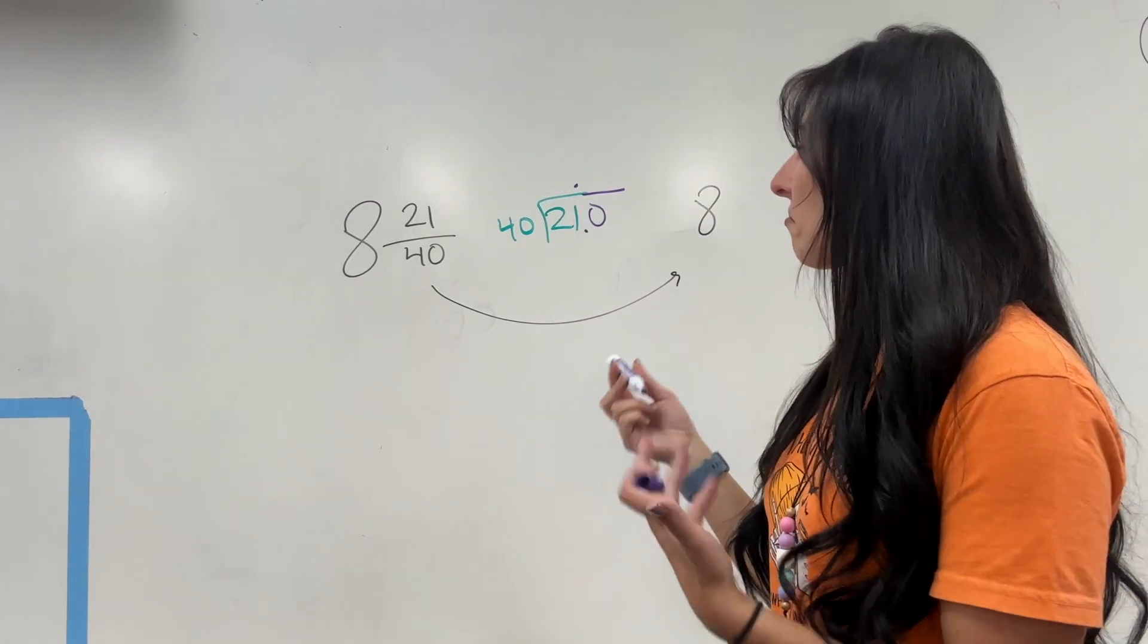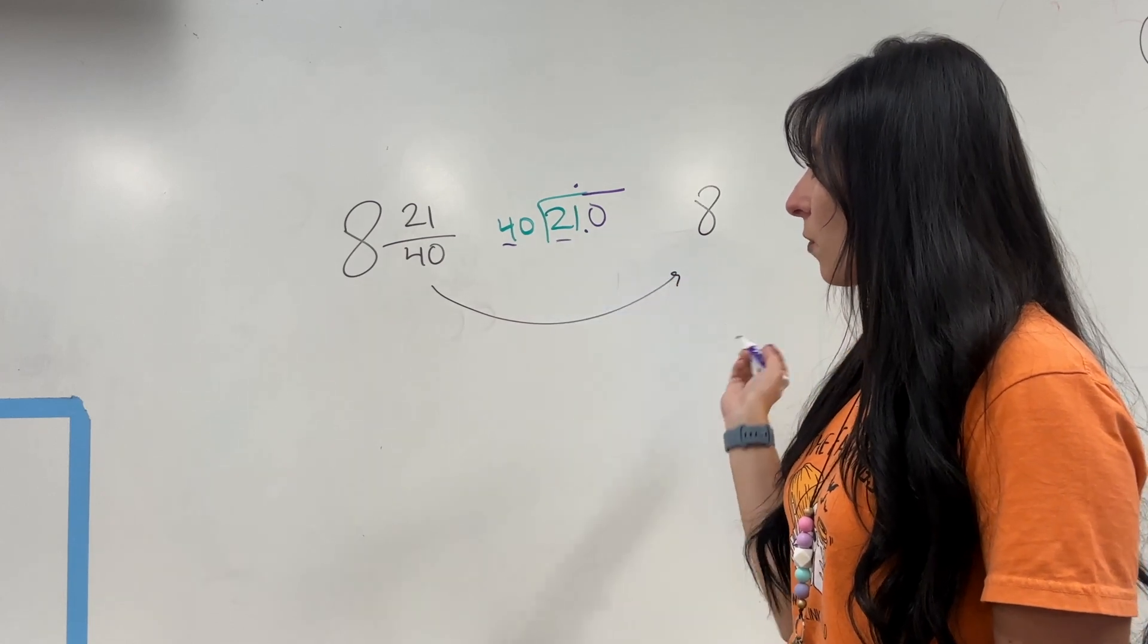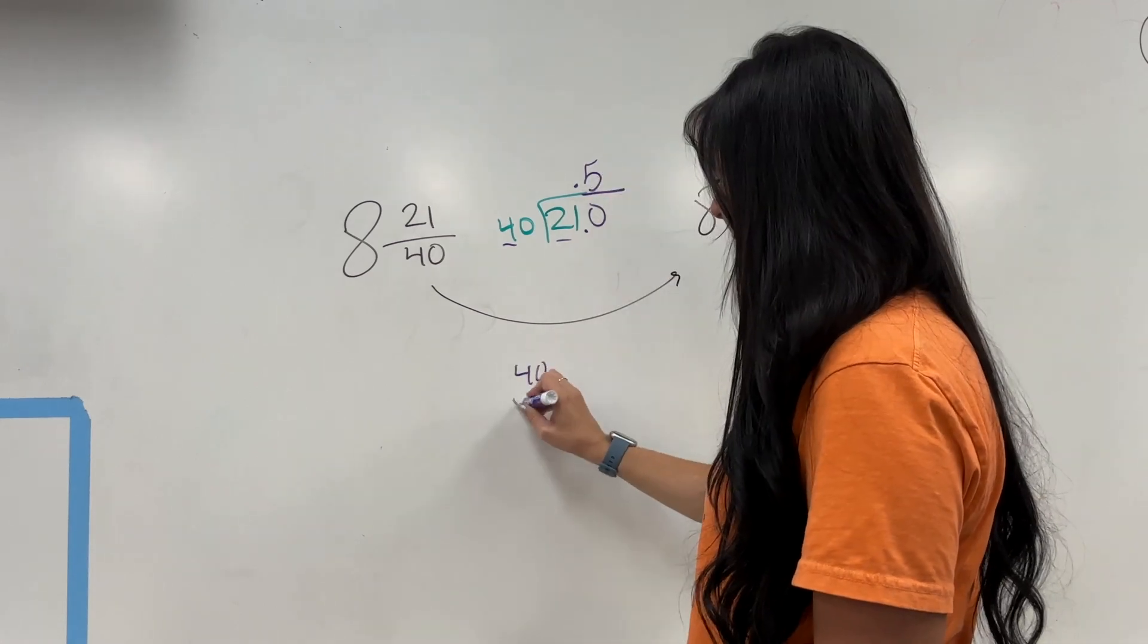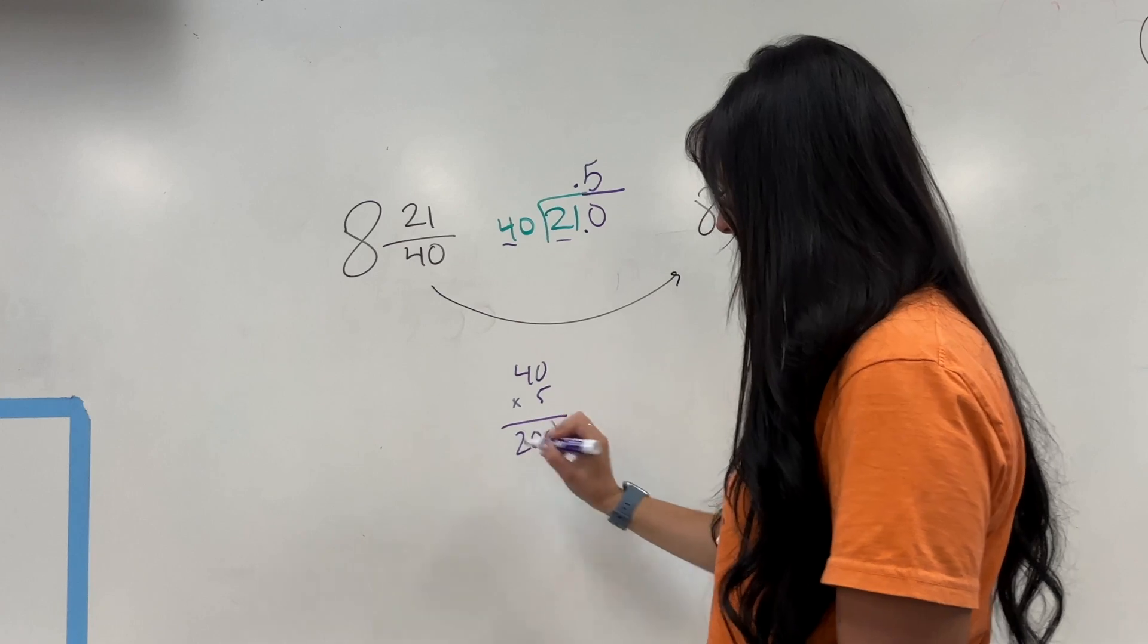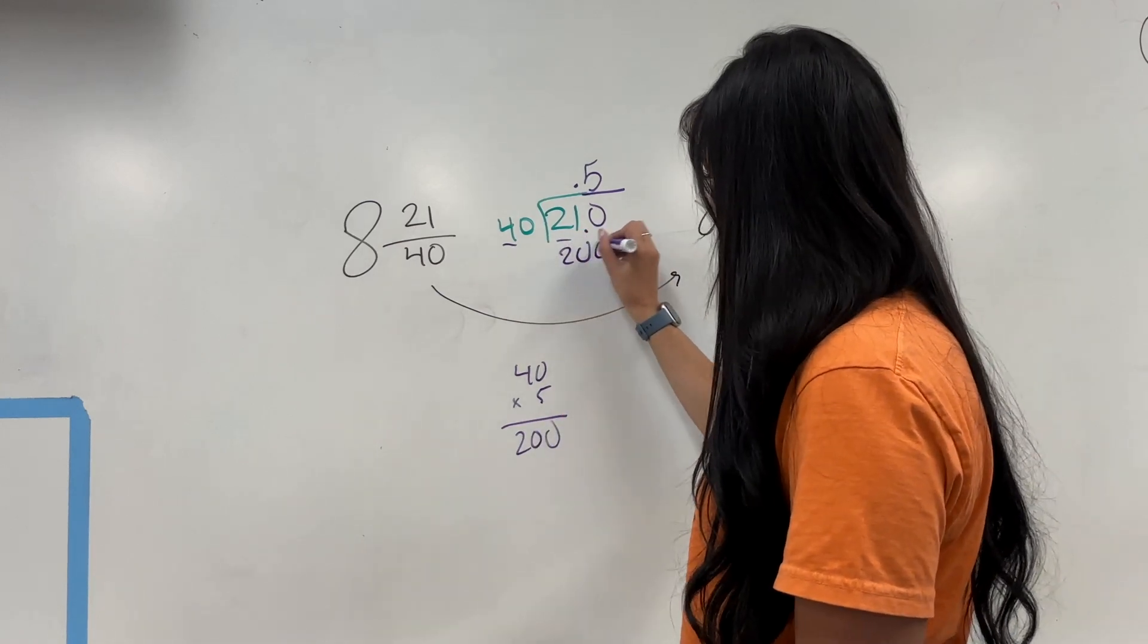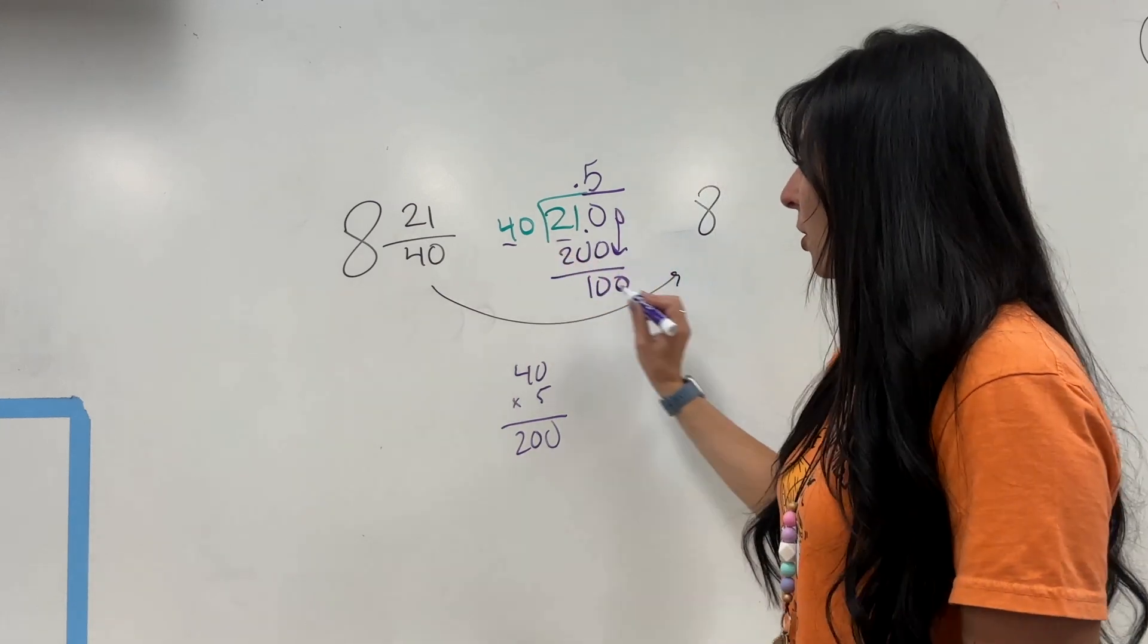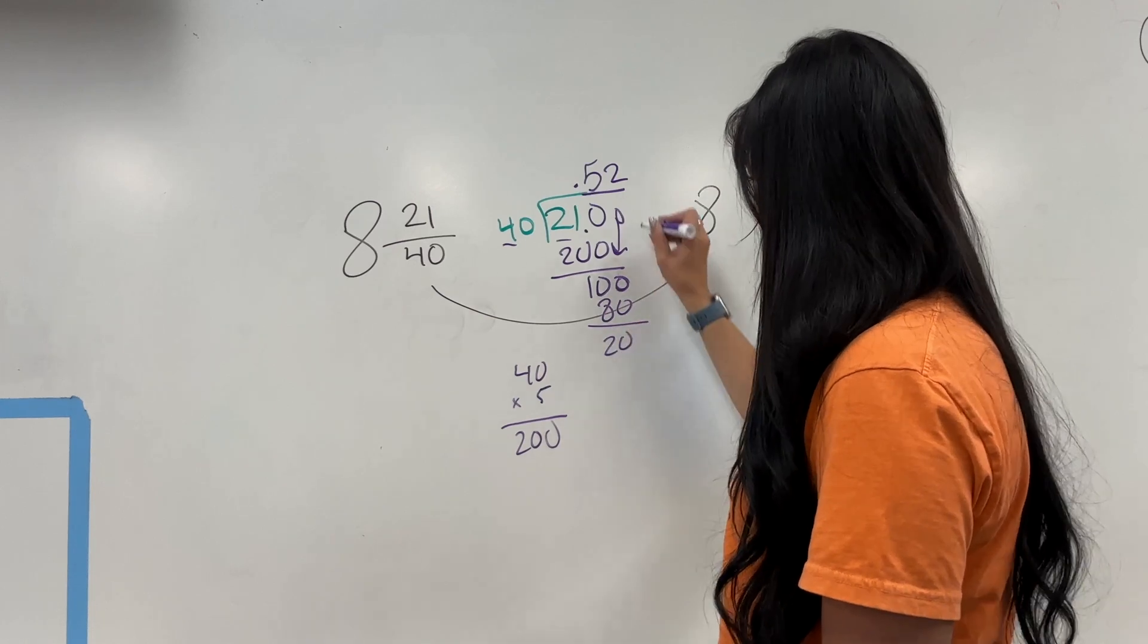Now, 40 goes into 210. How many times? I'm going to look at how many times 4 goes into 21. 4 goes into 21 about 5 times. Let me see. 40 times 5. 20 times 5. 200. I'm going to have 10 left over. Add a 0. Bring it down. 40 goes into 100 2 times. I have 80. 20.